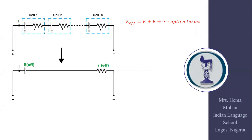Since all cells are connected in series, the effective EMF is the sum of the individual EMFs. Along a series circuit, potential differences and EMFs add up along the path, so the effective EMF is simply n times e. Similarly, resistances in series add up, so the effective internal resistance r_eff is also n times r. This combination of n identical cells thus reduces to a single cell of EMF ne and internal resistance nr.